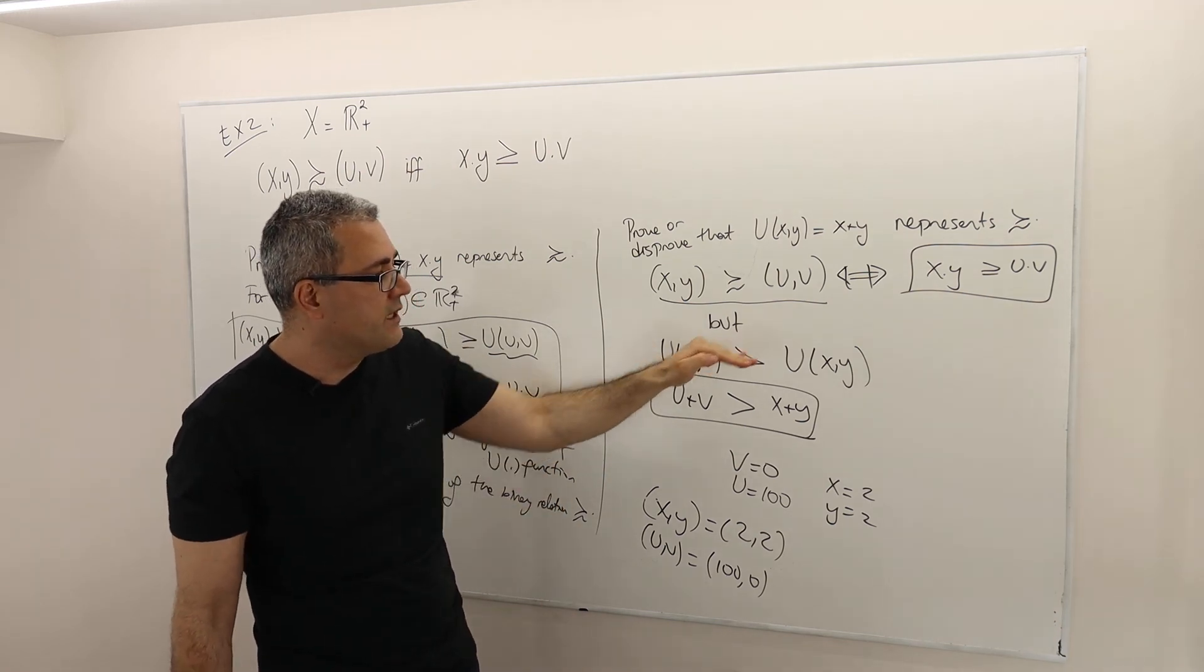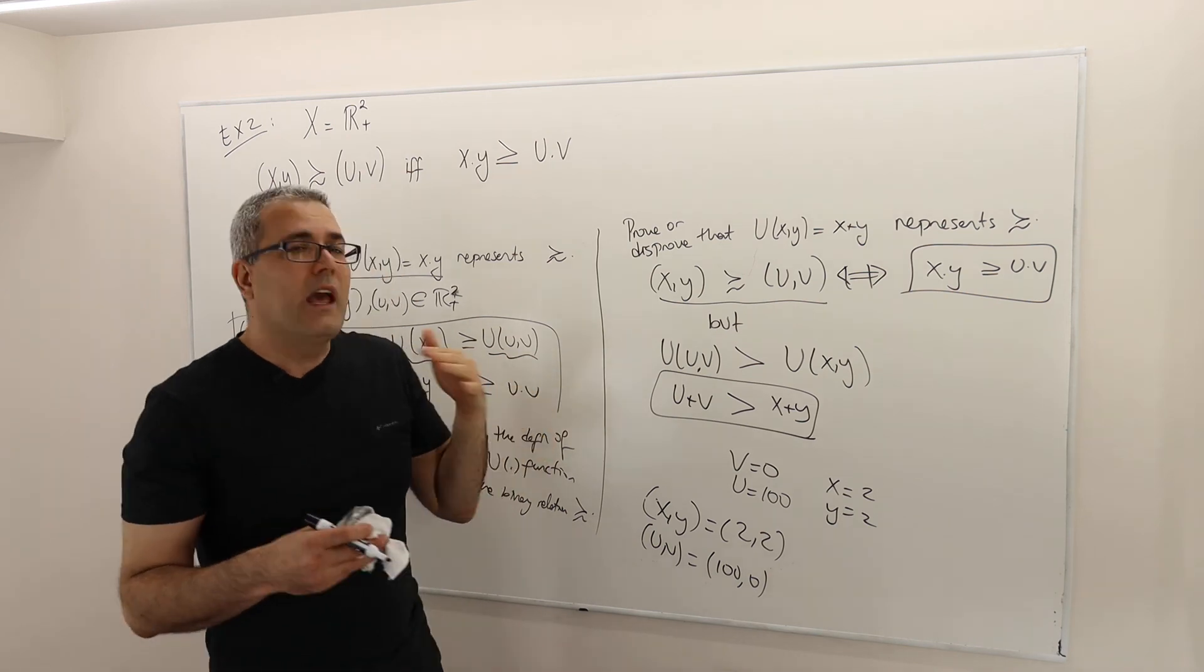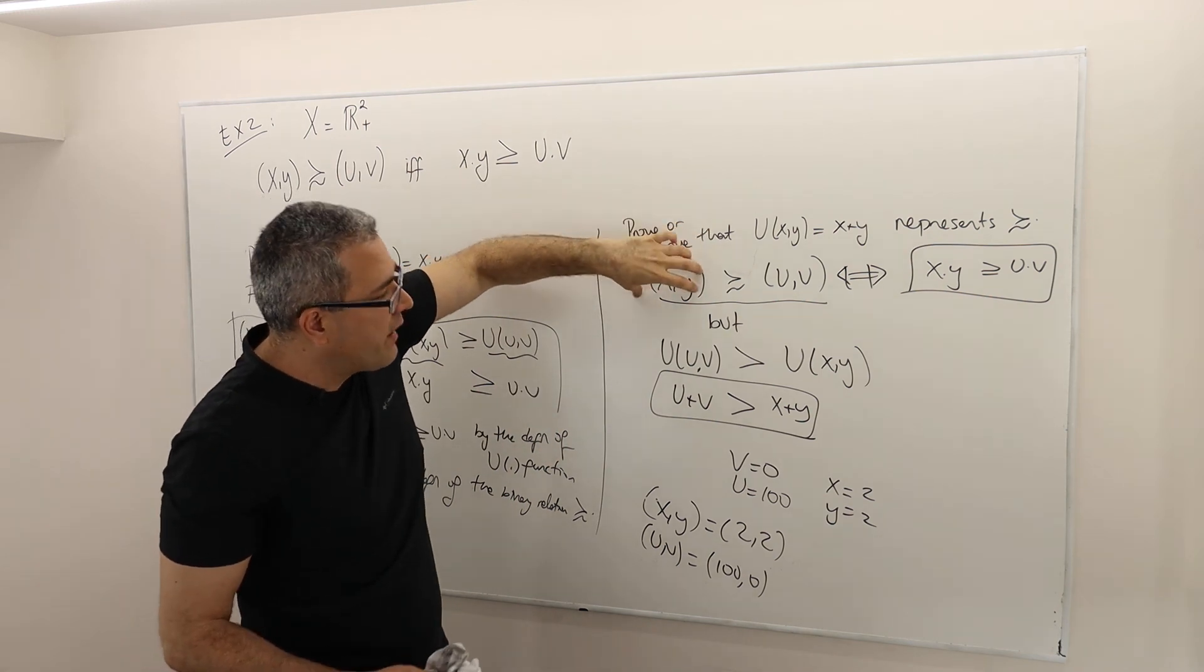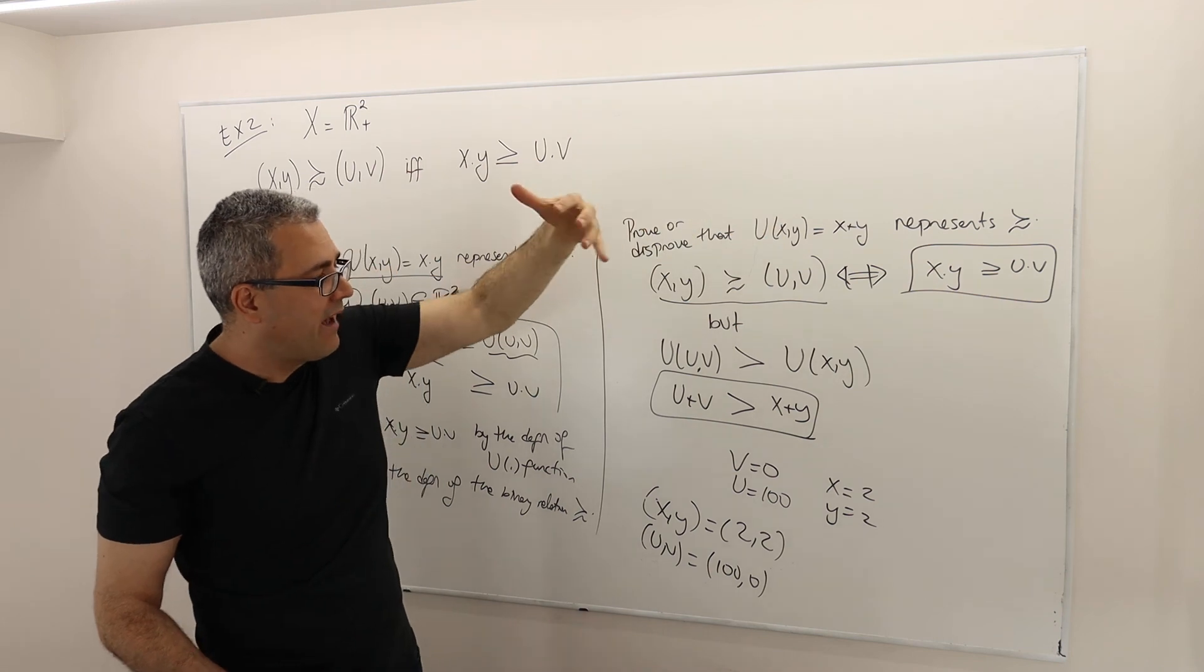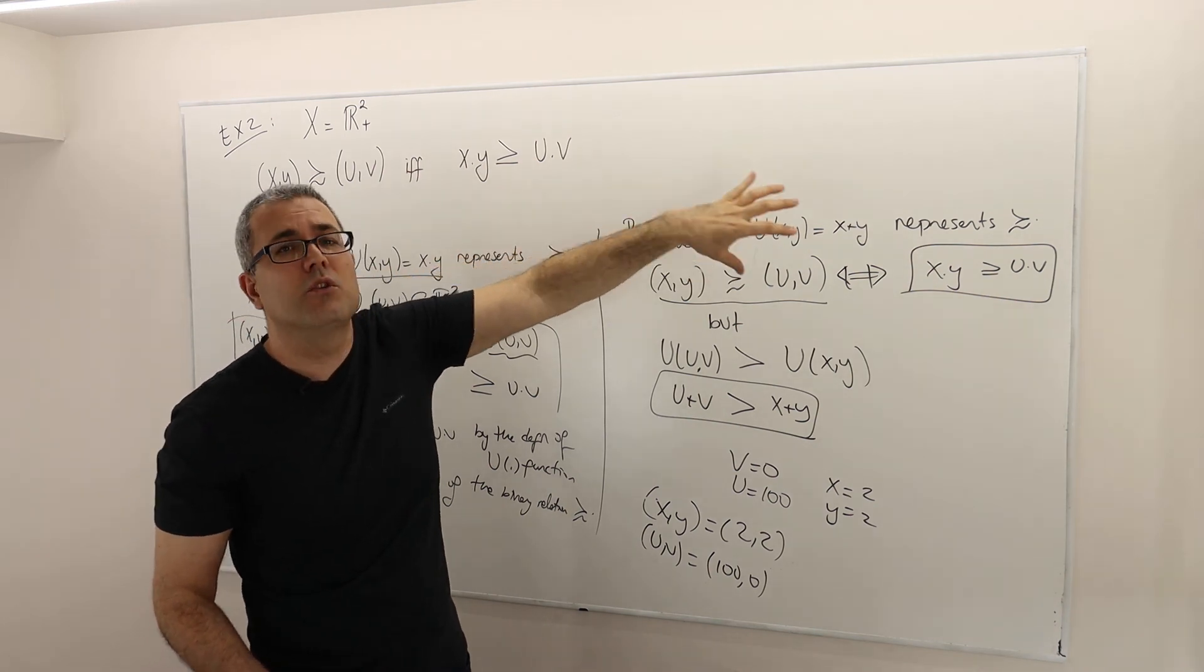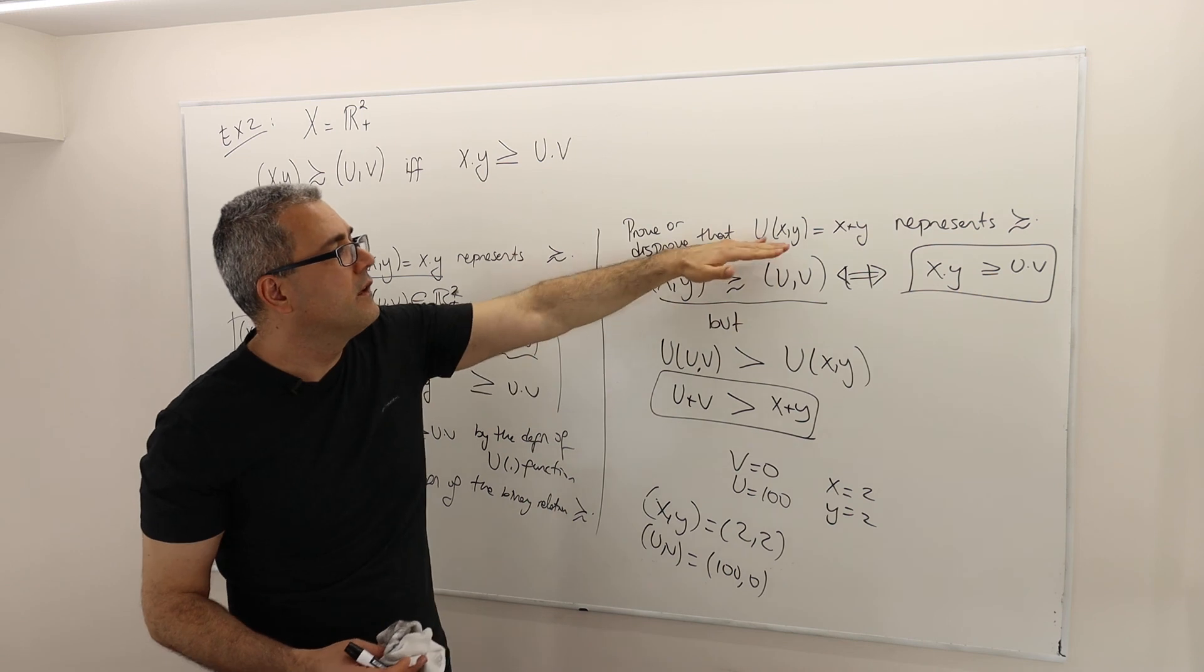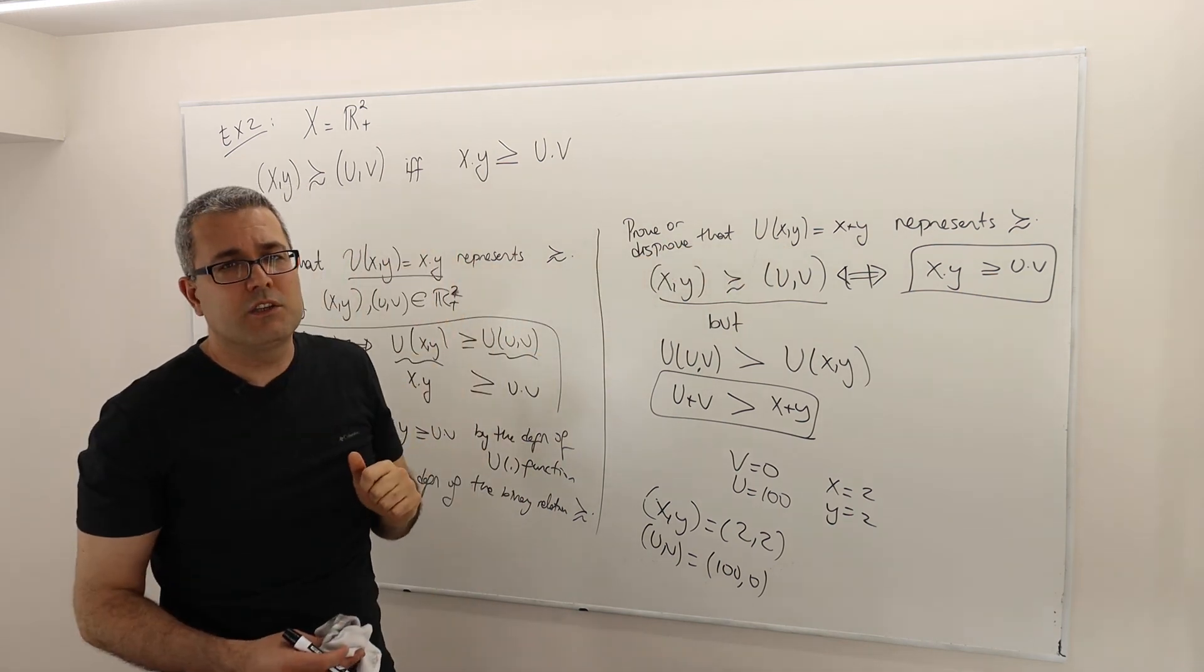Therefore, utility of U, V is greater than utility of X, Y. So what does that mean? Well, a utility function representing a binary relation means whenever I have one vector, one alternative at least as good as the other, I must have that the utility of this alternative is greater than or equal to the utility of the other alternative. But you know what? This doesn't hold here. Therefore, this utility function does not represent this binary relation.